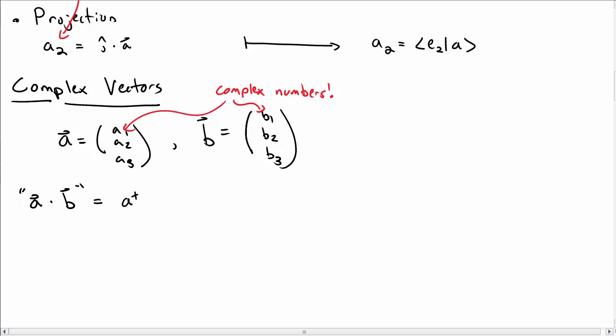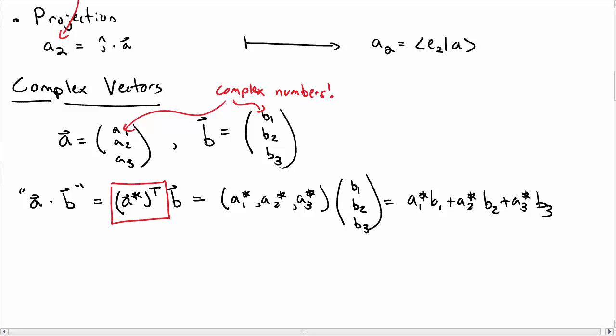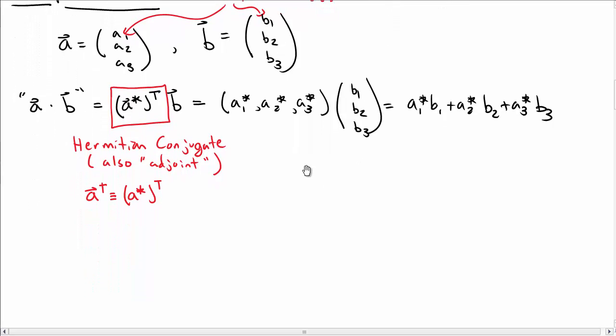Let's say I take an inner product between a and b. I need to take a star transpose b in order to take a proper inner product here for complex numbers. So that's a1 star, a2 star, a3 star, written as a row vector, and then b1, b2, b3, written as a column vector. If you multiply all that out, we get a1 star b1, a2 star b2, plus a3 star b3. This quantity here that I did when I took my inner product is called the Hermitian conjugate, the generalization of the transpose to complex vectors. It's also typically called the adjoint. So if I take the Hermitian conjugate of a, that means I take the complex conjugate and then the transpose.